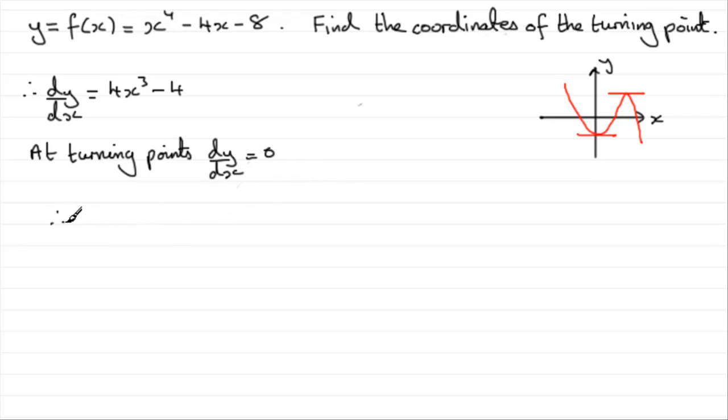So therefore, what we're going to have is 4x cubed minus 4 is going to equal 0. A cubic equation, we need to try and factorize it so we could pull out 4. 4 bracket x cubed minus 1 equals 0. So we've got two factors here, the 4 times the other factor x cubed minus 1. 4 can't equal 0, so it's got to be, therefore, x cubed minus 1 that equals 0.